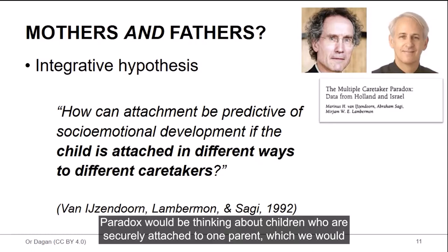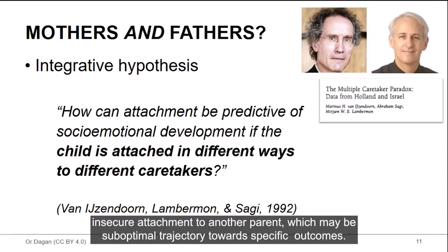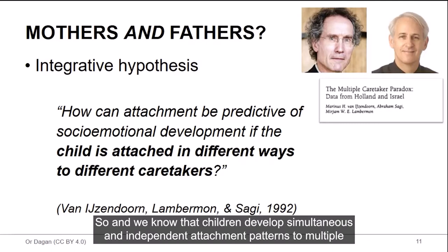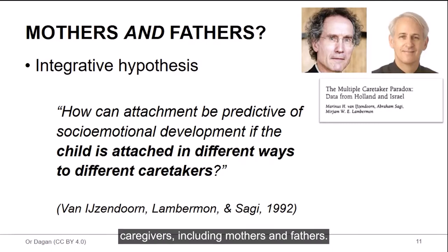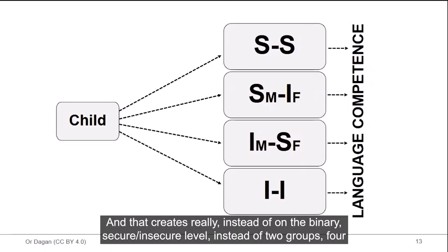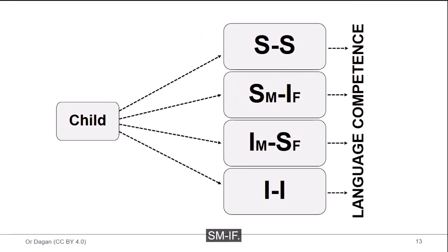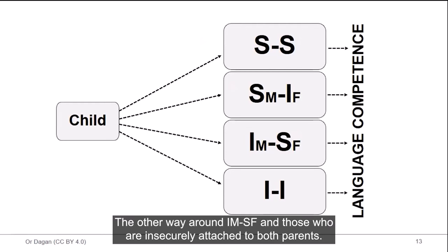The epitome of this paradox would be thinking about children who are securely attached to one parent, which we would think about as optimal or setting them in an optimal trajectory towards specific outcomes, but also insecure attachment to another parent, which might be sub-optimal trajectory towards specific outcomes. And we know that children develop simultaneous and independent attachment patterns to multiple caregivers, including mothers and fathers. So what are we to make of these children? Children come into the world, they are attached to mothers, but that's not the end of the story. They then get attached to fathers, and that creates really, instead of on the binary secure and insecure level, instead of two groups, four groups of children. Those who are securely attached to both parents, secure-secure. Those who are securely attached only to mothers, but insecure attached to fathers, SM-IF. The other way around, IM-SF, and those who are insecurely attached to both parents.